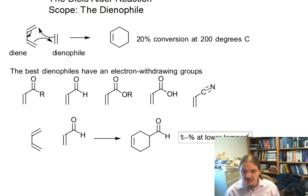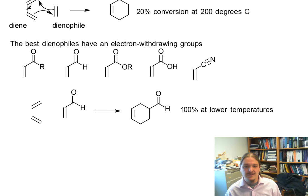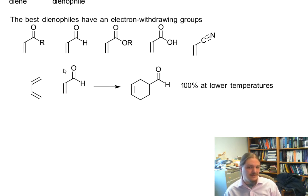100% at lower temperatures. So here we have electron withdrawing groups really help out the dienophile.